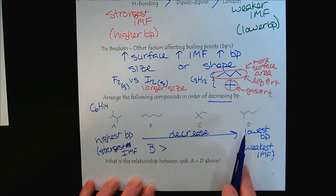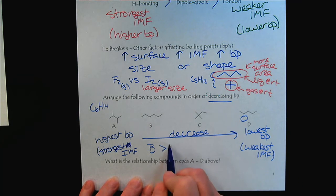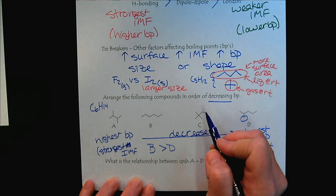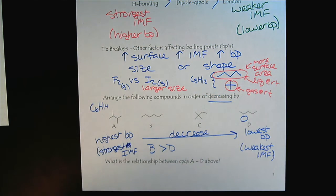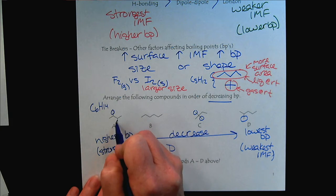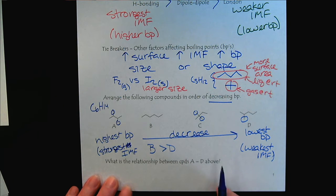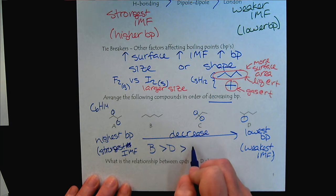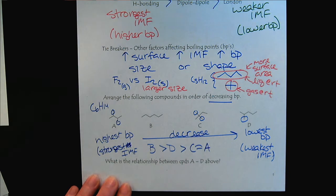And so then we would look to compound D, because it only has one branch. And then when we get to compound C, these two are kind of tricky here. We have the two branches, and the two branches here. So these would be very similar. So I would just say C approximately to A. So we can't tell these two. These two would be very close. We would be hard-pressed.